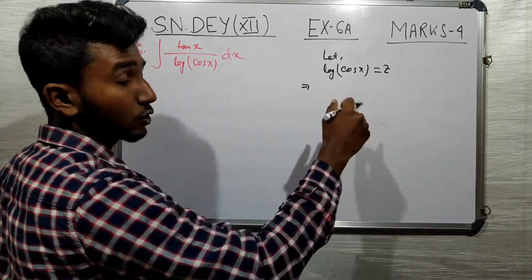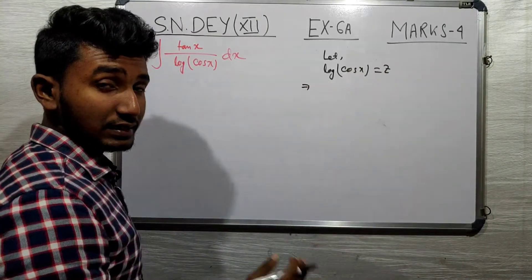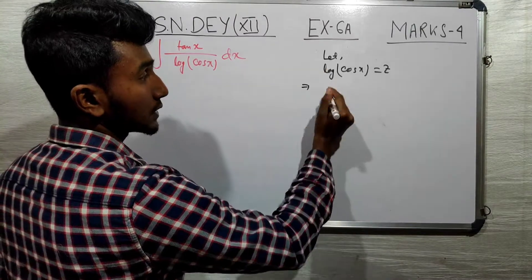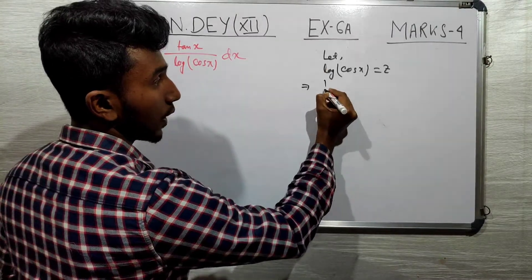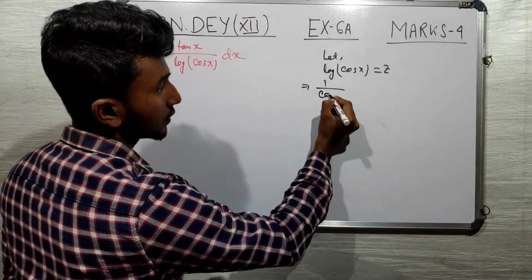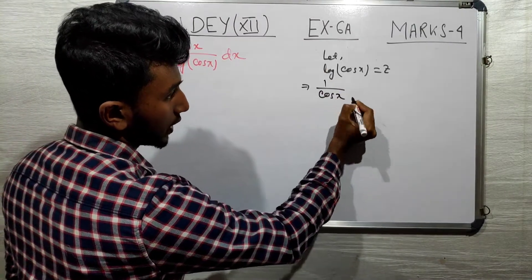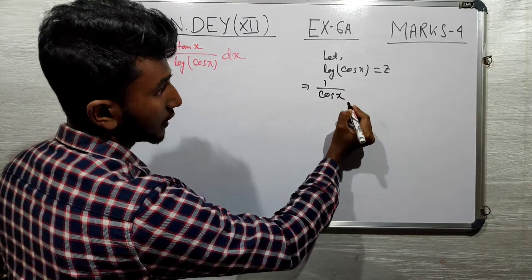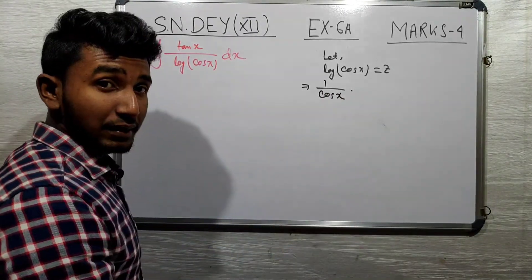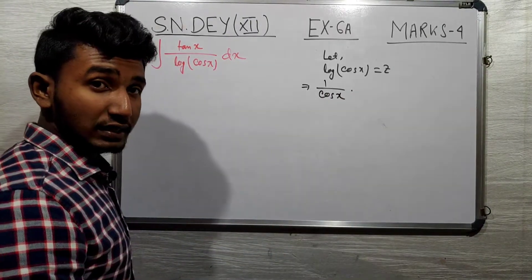Now, what is the derivative of log(cos x)? The derivative of log(x) is 1 by x. So the derivative of log(cos x) is 1 by cos(x), multiplied by the derivative of cos(x).